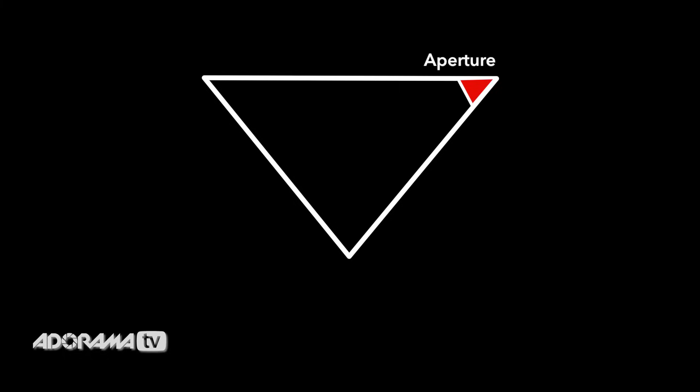The exposure triangle is made up of three things and these three things never change, so once you have these down you're going to be good to go forever. It's very simple. In the exposure triangle we have the aperture, the shutter, and ISO. These three things work together to give us a perfect exposure.